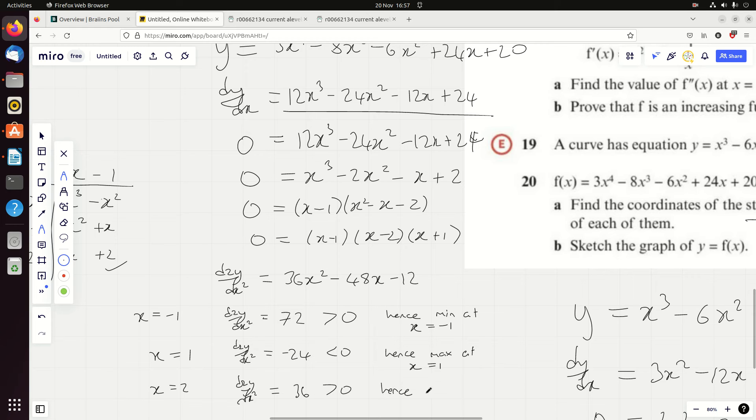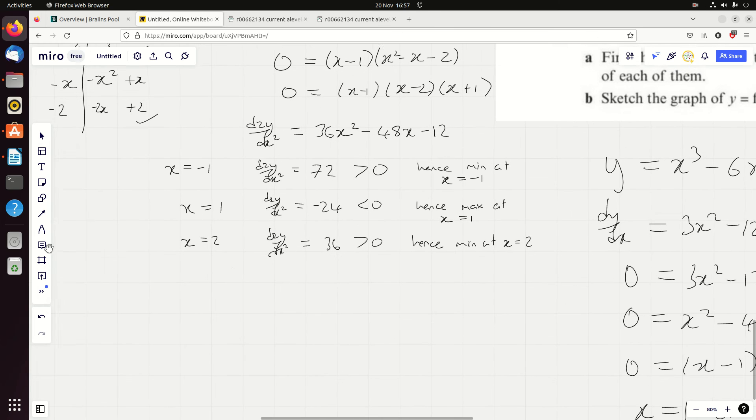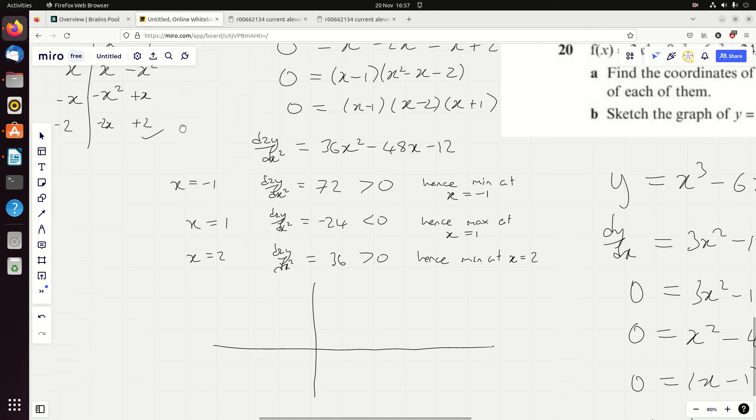Now that means I can draw it. I do need to find the y coordinates - I'll do that in a second, just being super lazy here. It goes through minus 1, oh and it's not cubic. The turning points are at minus 1, 1, and 2.